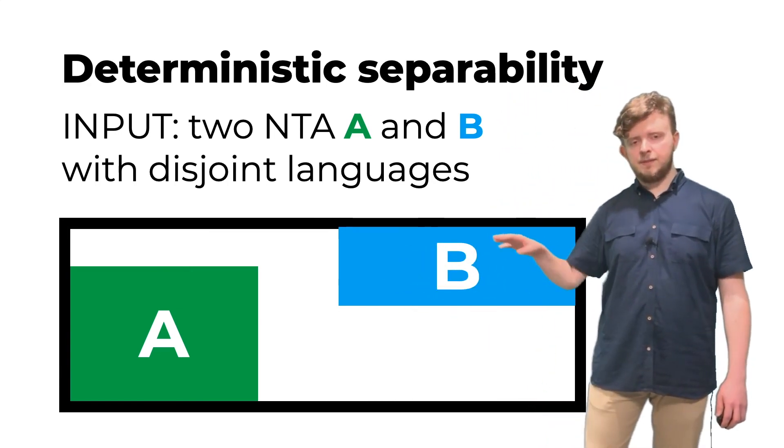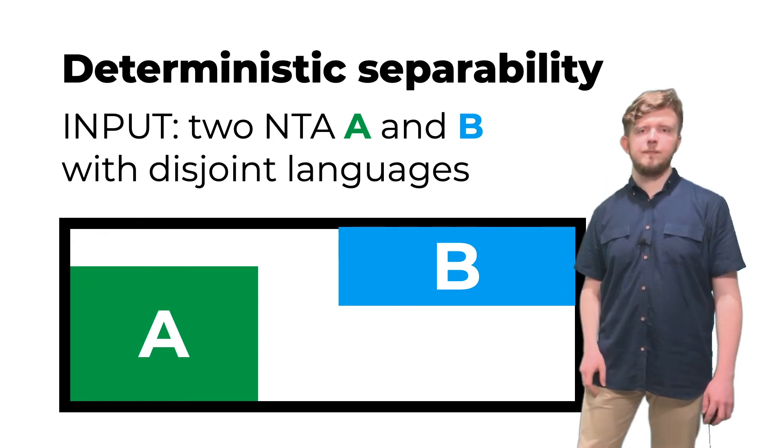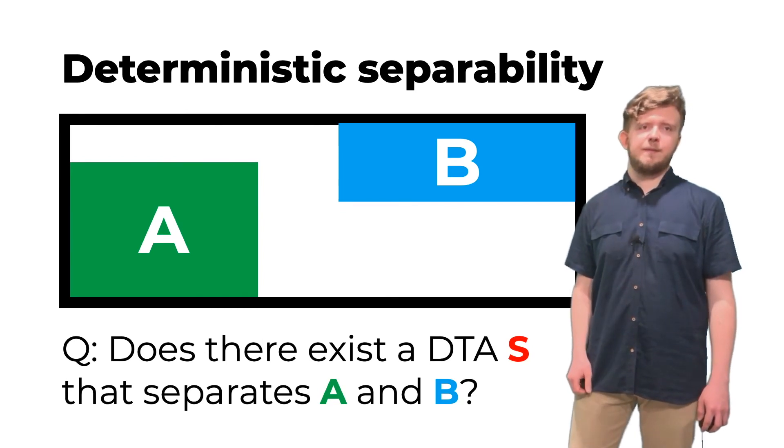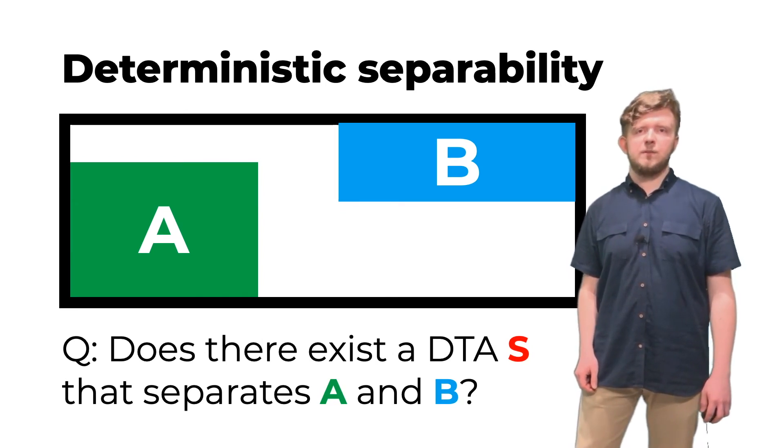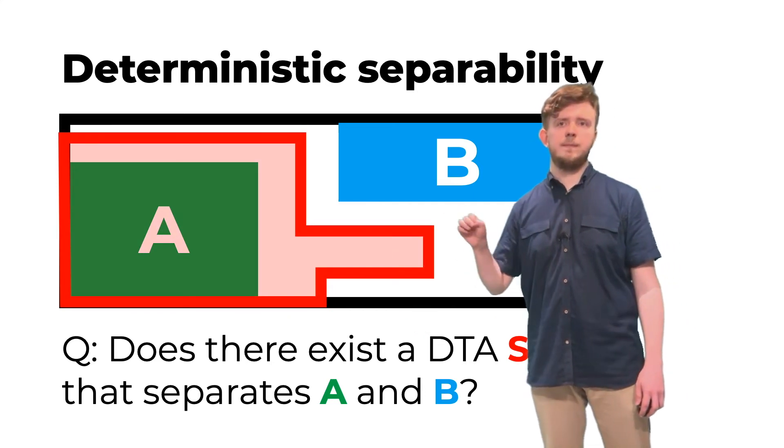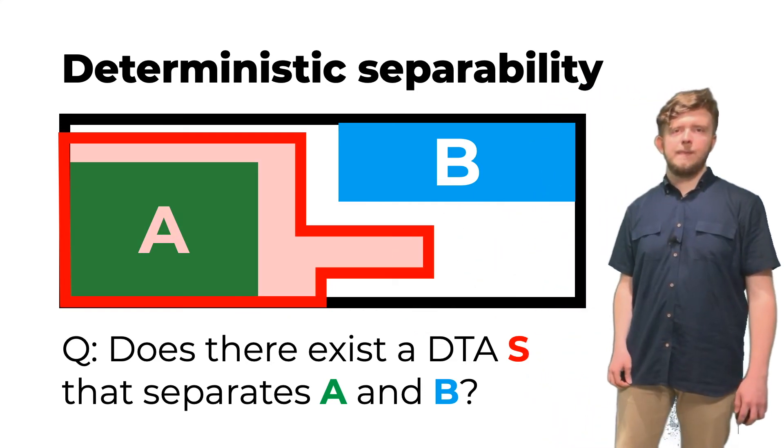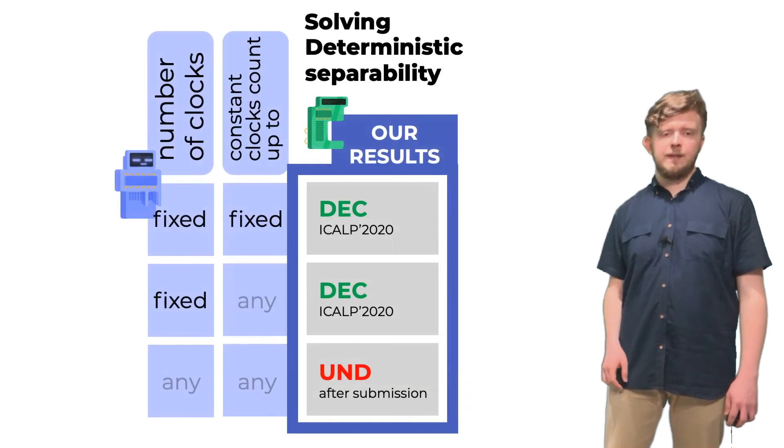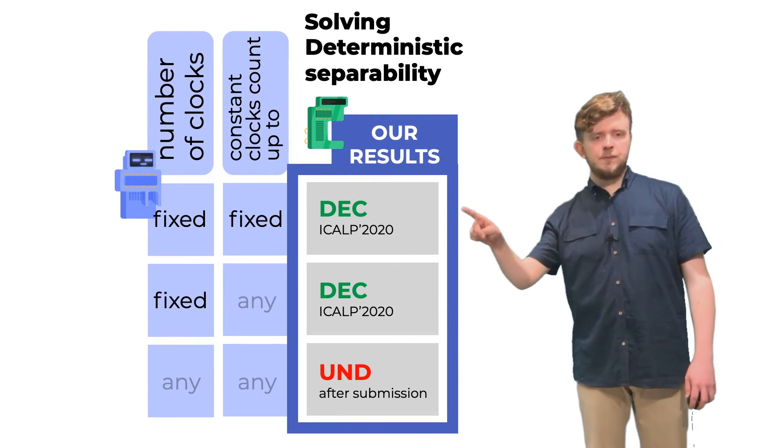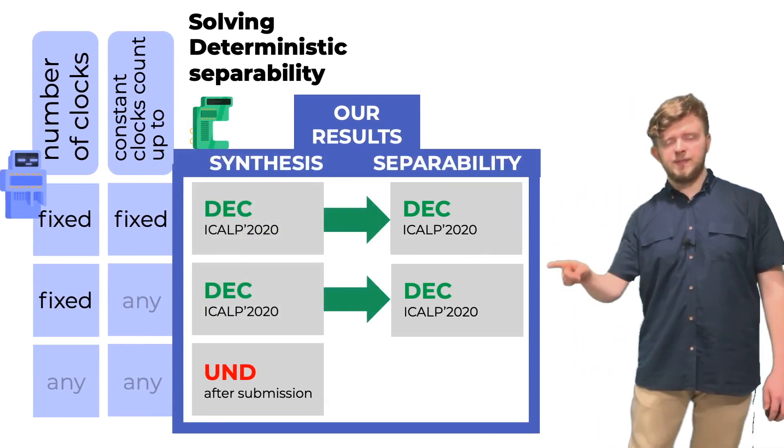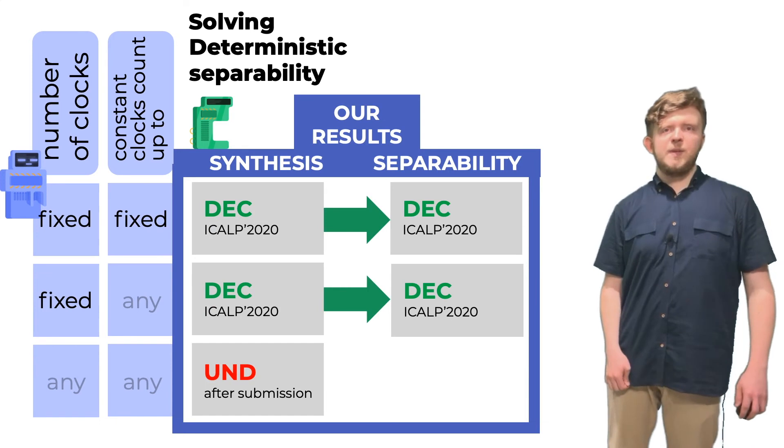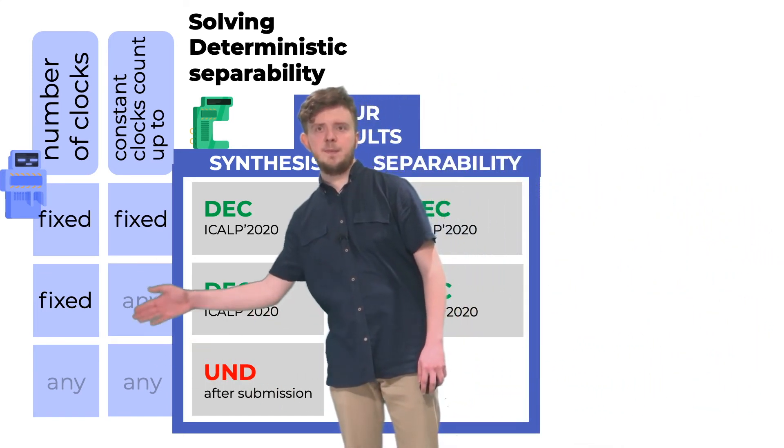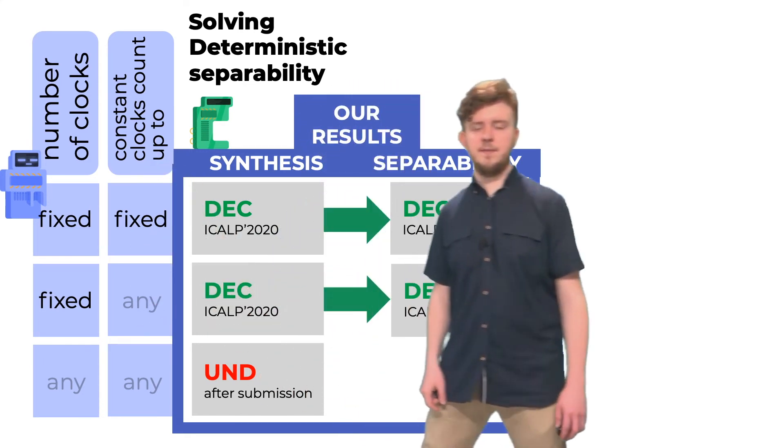So, the question is now whether there exists a separator, a simpler deterministic automaton, that separates A from B. Now, using our results from the table, we may solve this separability question as follows. So, we use those two results to solve those two separability questions. As you may have already figured it out, the separability problem is paraphrased by the same set of choices that we made in the case of synthesis.